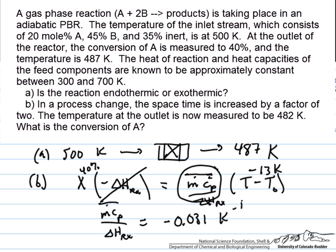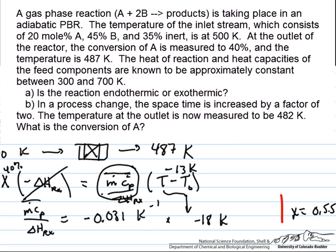This constant remains fixed when we change the spacetime by a factor of 2. Our life is made easier because we're simply told what happens to the outlet temperature: it goes down an additional 5 degrees, from 487 to 482K, giving a negative 18K for the temperature difference term. Nothing changes in our collected constants — ṁCp and delta H are the same as before. So we plug those in after dividing through by delta H of reaction and solve for x. X equals 0.031 times negative 18K, giving x equal to 0.55.